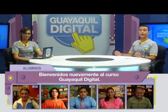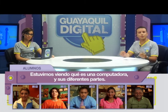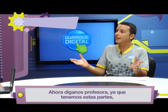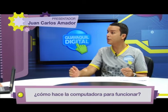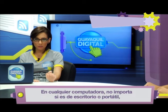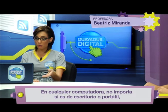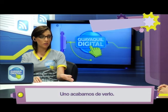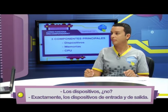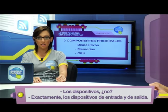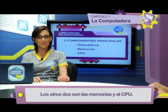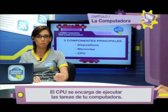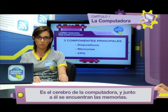Bienvenidos nuevamente al curso Guayaquil Digital. Estuvimos viendo qué es una computadora y sus diferentes partes. Ahora, ¿cómo hace la computadora para funcionar? En cualquier computadora, no importa si es de escritorio o portátil, pueden reconocerse tres principales componentes: los dispositivos de entrada y de salida, las memorias, y el CPU. El CPU se encarga de ejecutar las tareas de tu computadora, es el cerebro de la computadora. Y junto a él se encuentran las memorias.